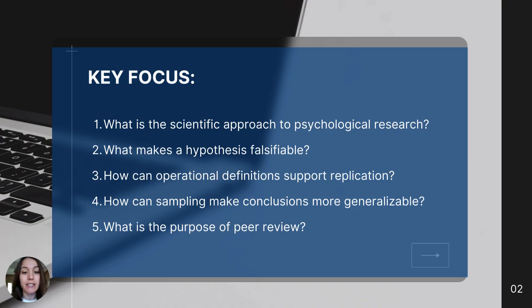Number two, what makes a hypothesis falsifiable? Number three, how can operational definitions support replication? Number four, how can sampling make conclusions more generalizable? And number five, what is the purpose of peer review?